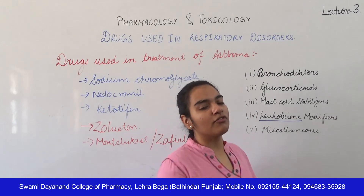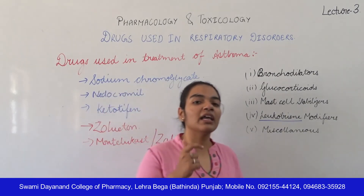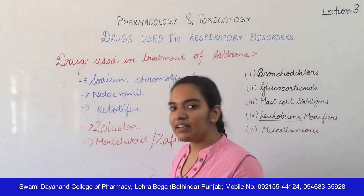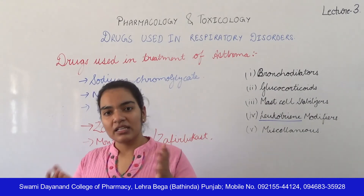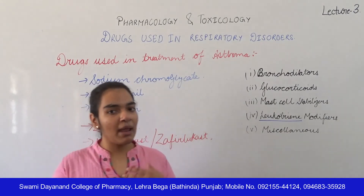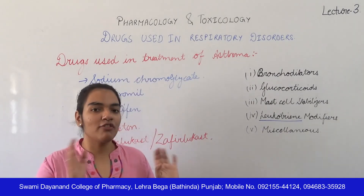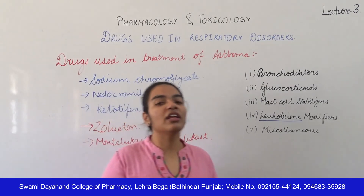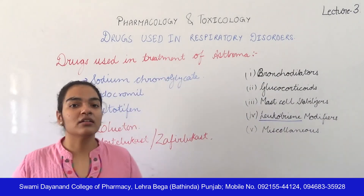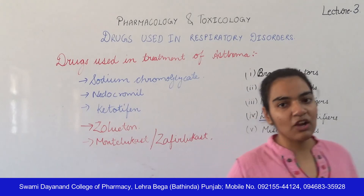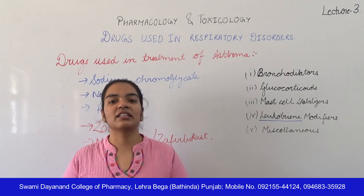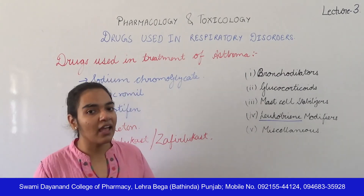For special patients such as pregnant women or heart patients, beta-2 selective agonists are used. Calcium channel blockers are also prescribed for heart patients. Glucocorticoids are not contraindicated in these patients and may be used for chronic asthma.